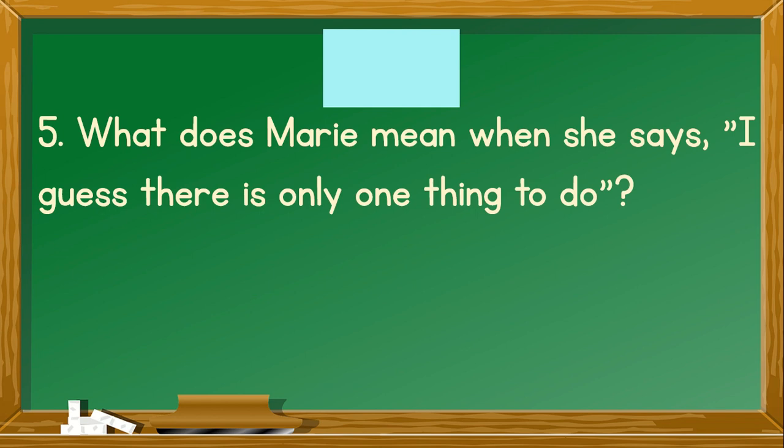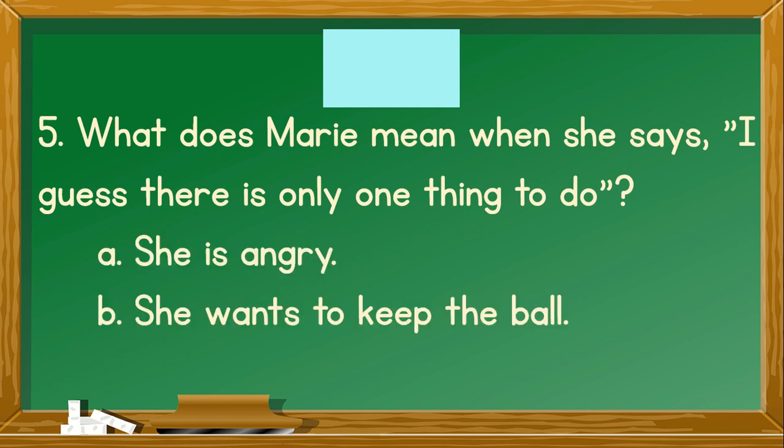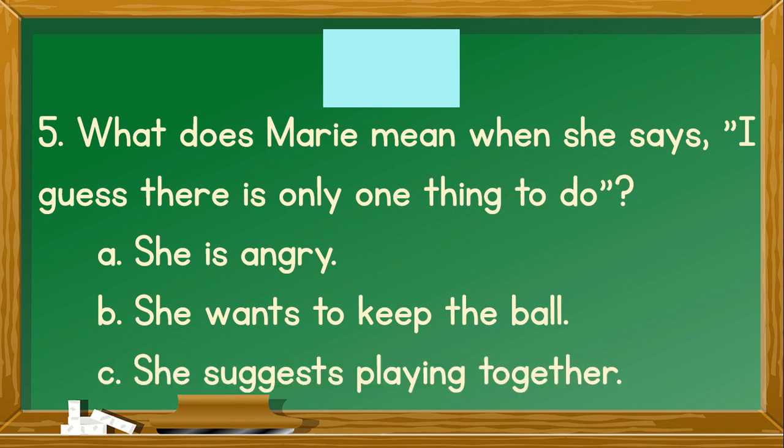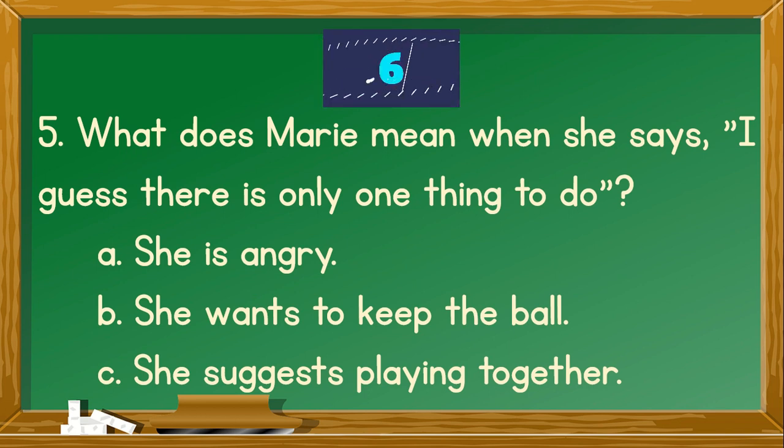Number 5. What does Marie mean when she says, I guess there's only one thing to do? A. She's angry. B. She wants to kick the ball. C. She suggests playing together. You're right. The correct answer is C. She suggests playing together. How many scores did you get? Wow, that's a good job.